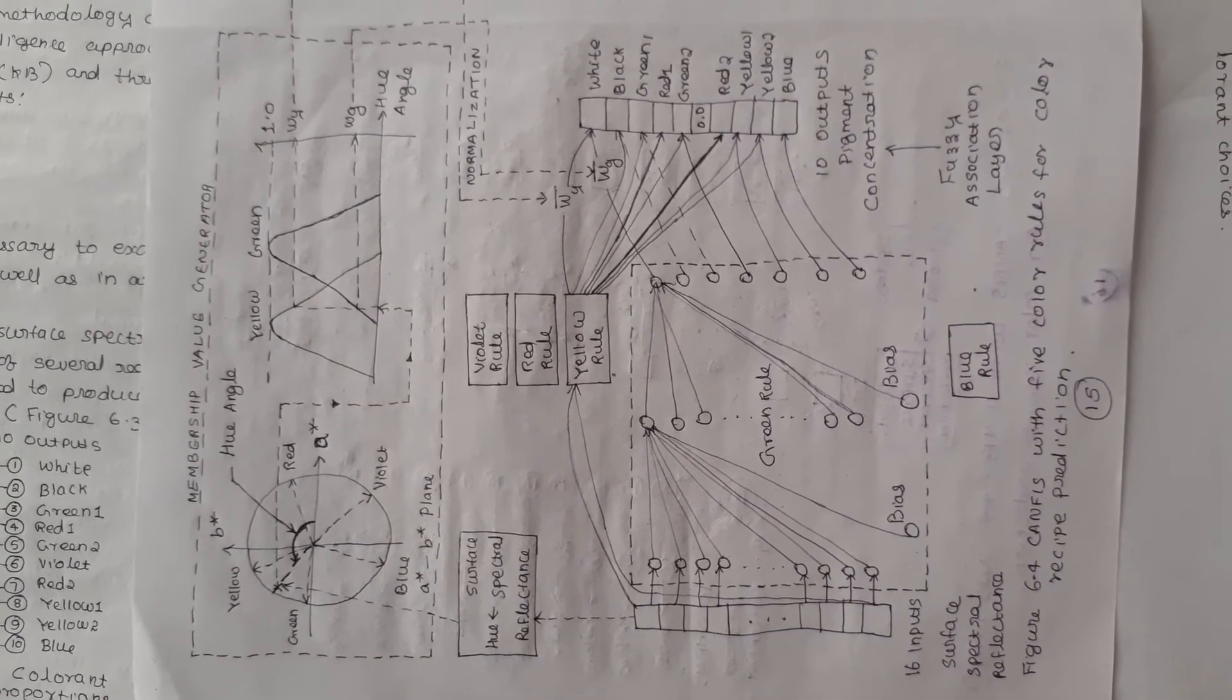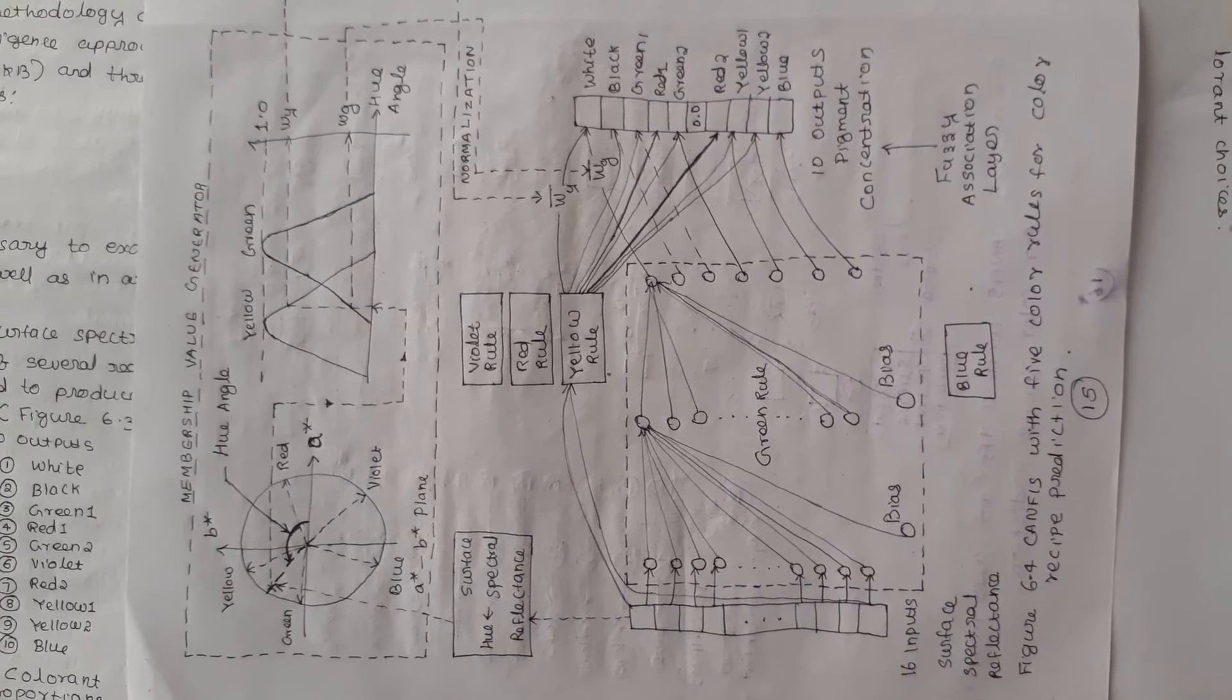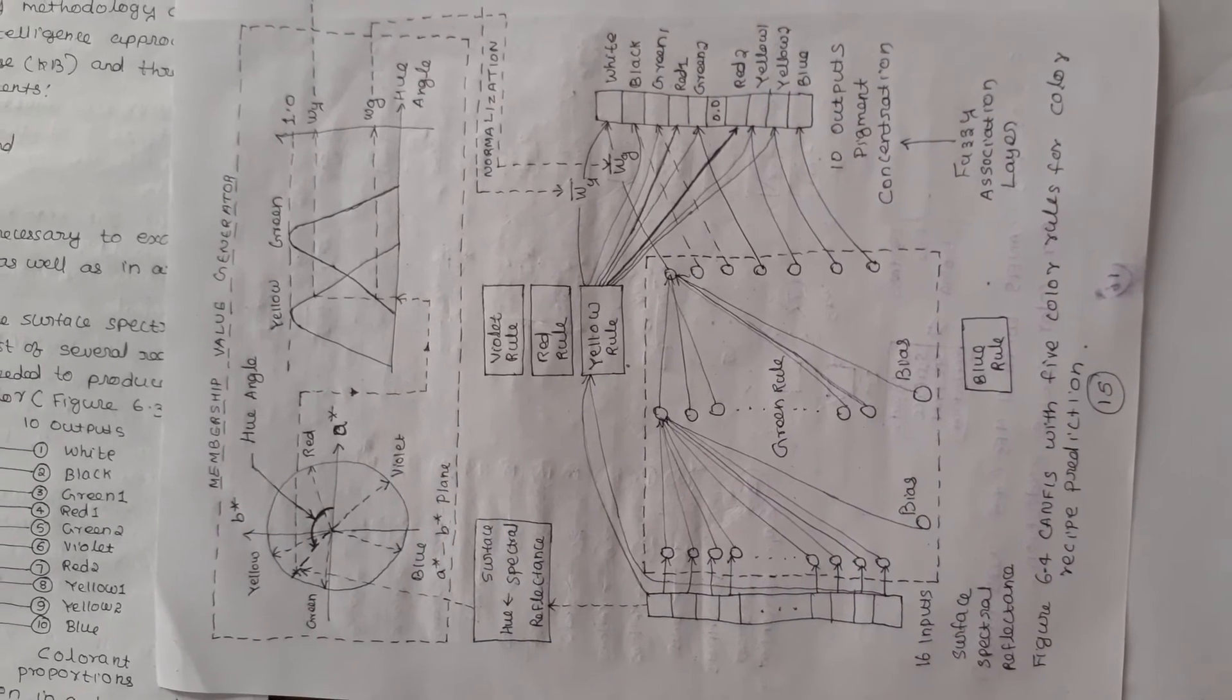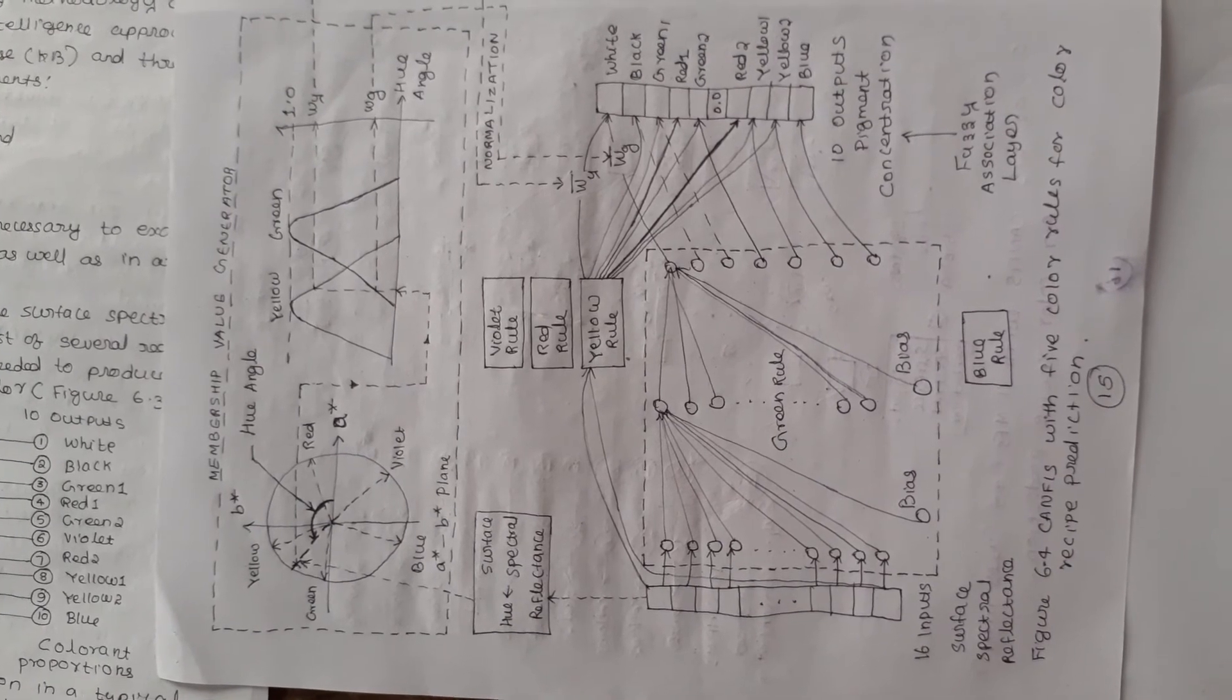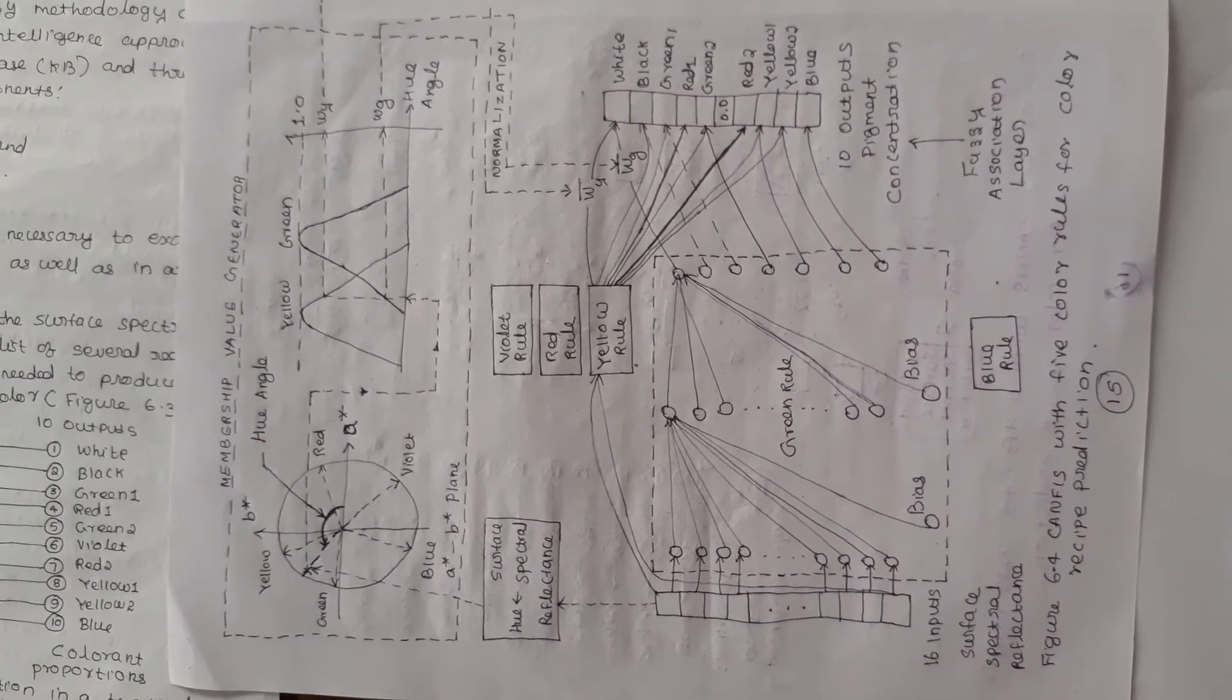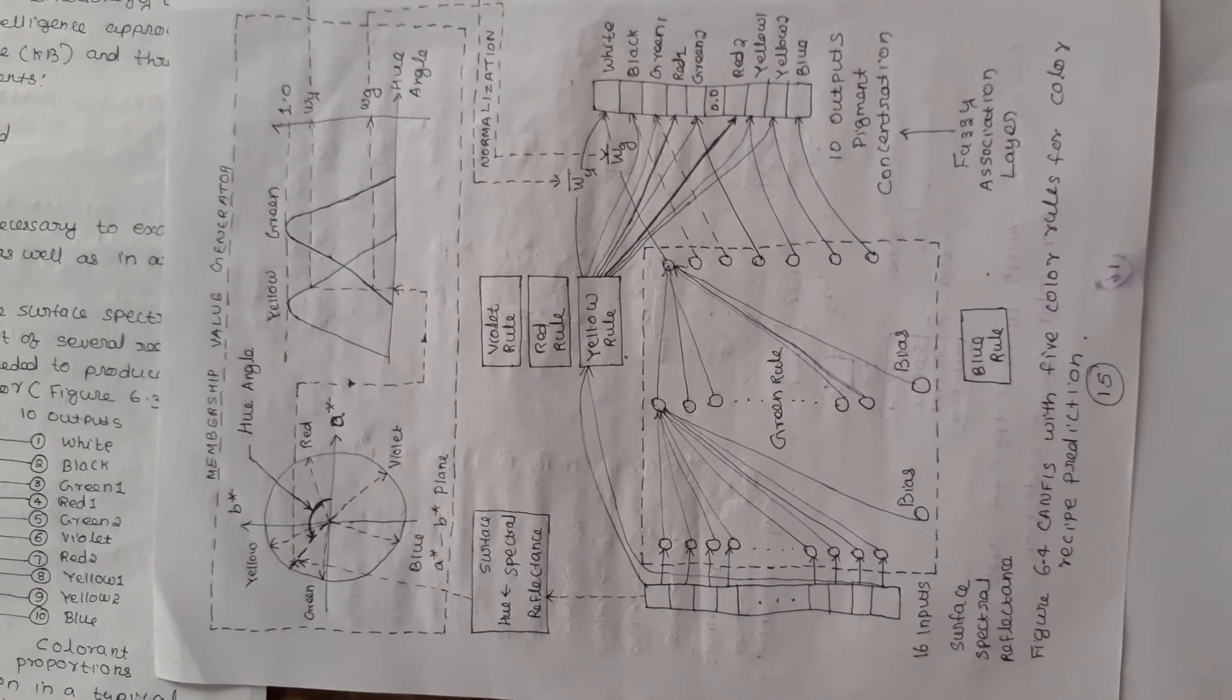For example, the rules for the yellow region between green and red area: Yellow rule 1: if the target color is greenish-yellow, then use a greenish-yellow rule. Yellow rule 2: if the target color is very yellow, then use a very-yellow rule. Yellow rule 3: if the target color is reddish-yellow, then use a reddish-yellow rule.